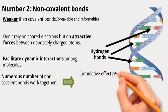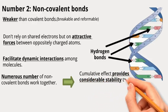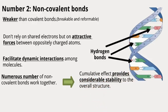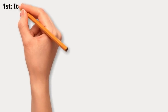This cumulative effect provides considerable stability to the overall structure. In this video, we'll explore various types of non-covalent bonds that play important roles in cellular activities. First, ionic bonds.